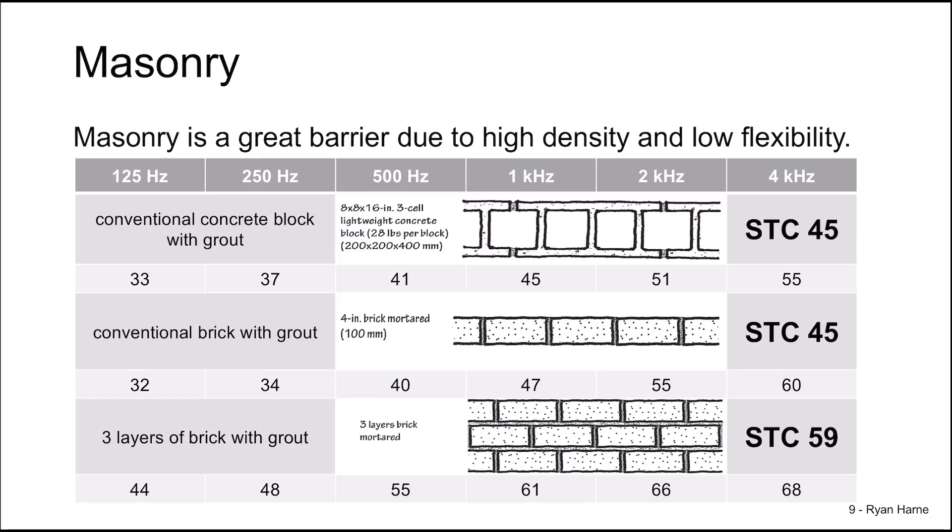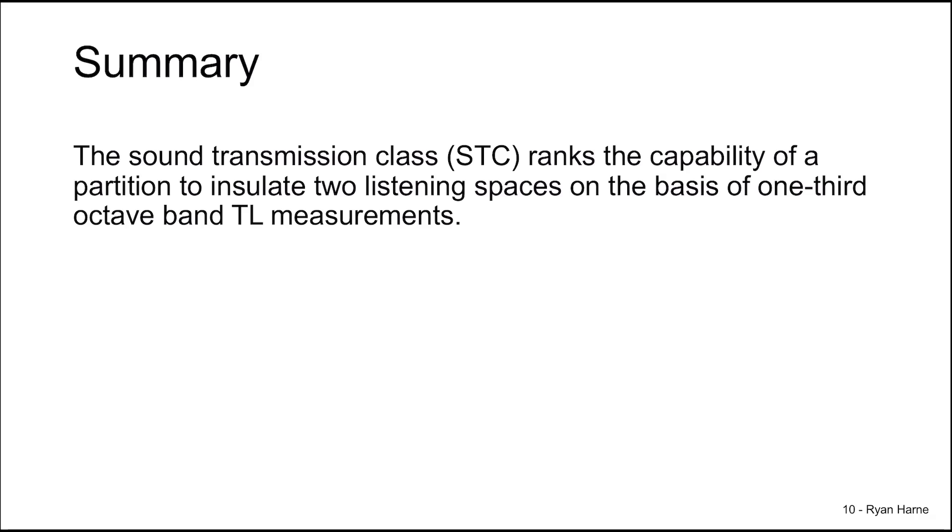When we go from one layer of brick to three, our STC increases to STC 59. So it's important to recognize that STC 59 for three layers of brick is less than STC of 67 for a double stud wall with insulation. That elimination of the direct path of sound is significant to suppress sound transfer between rooms.